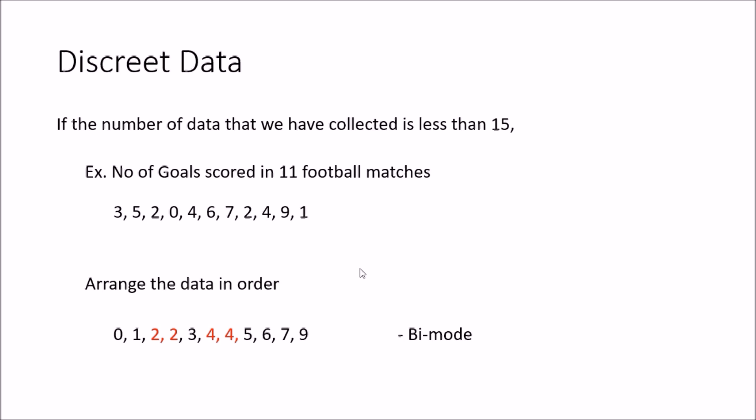In the third example, again 11 football matches: once you arrange the data in order, you can see that there is no value which is repeated more than once. All the values have a frequency of one. Therefore in this case we do not have a mode — we call it a no-mode system, where all values are repeated only once.